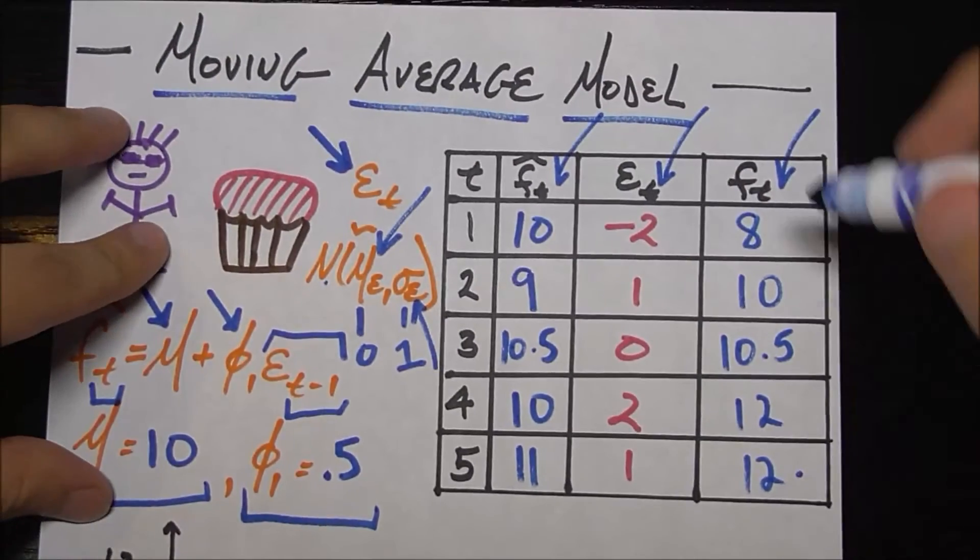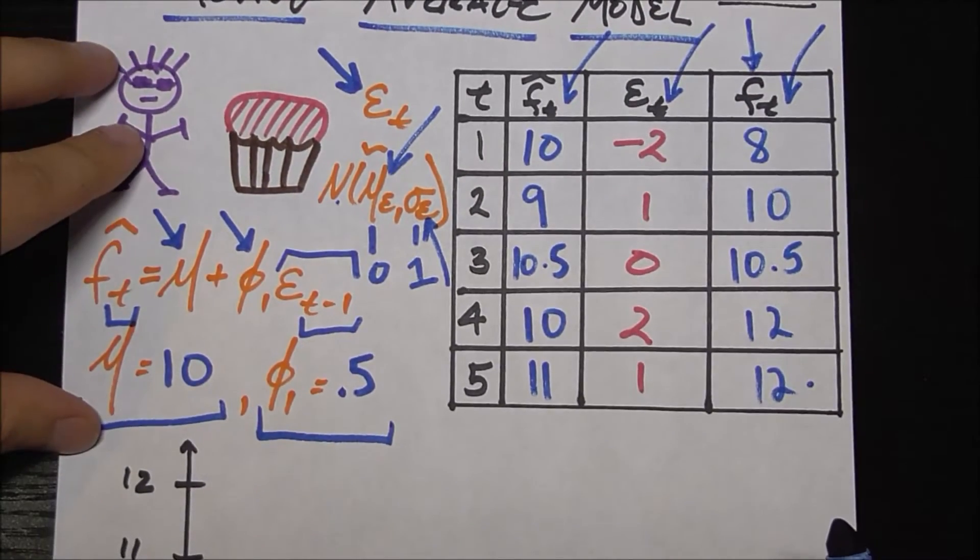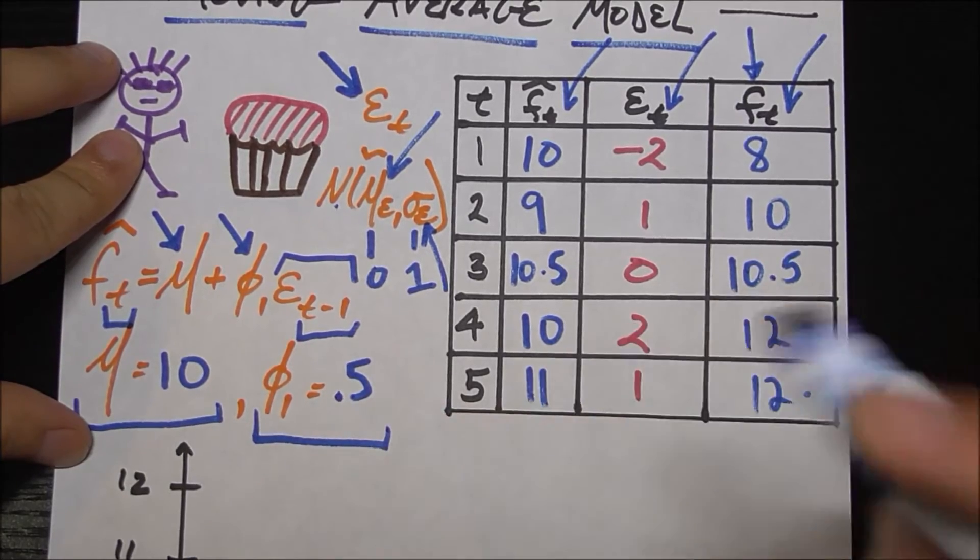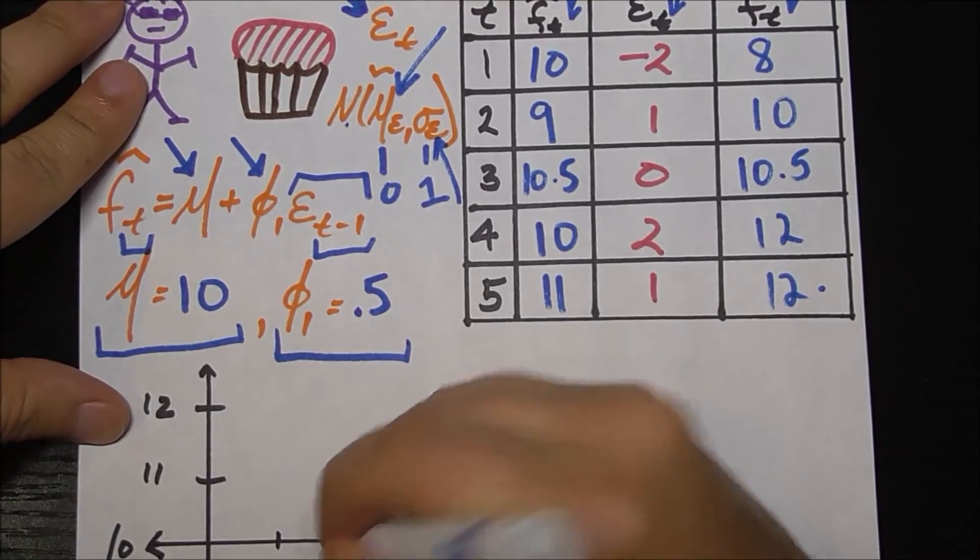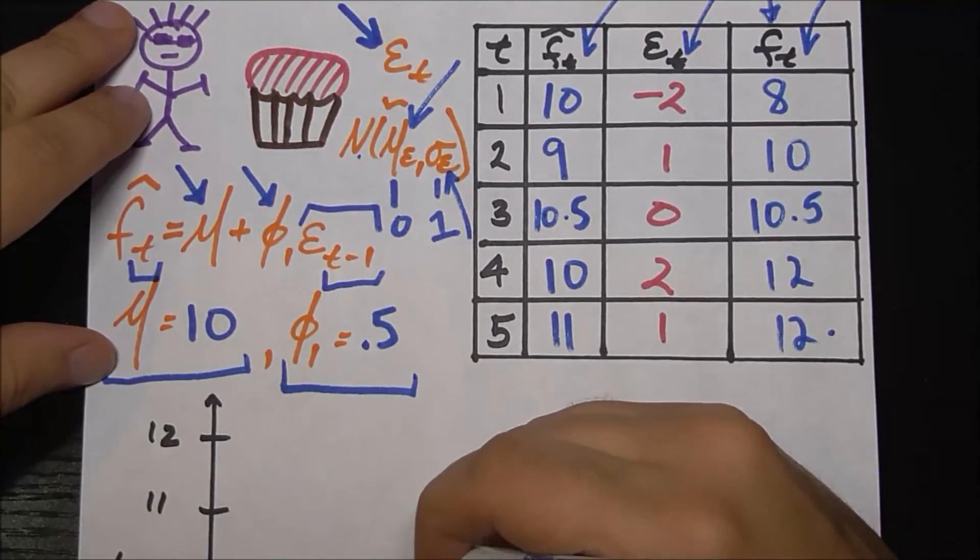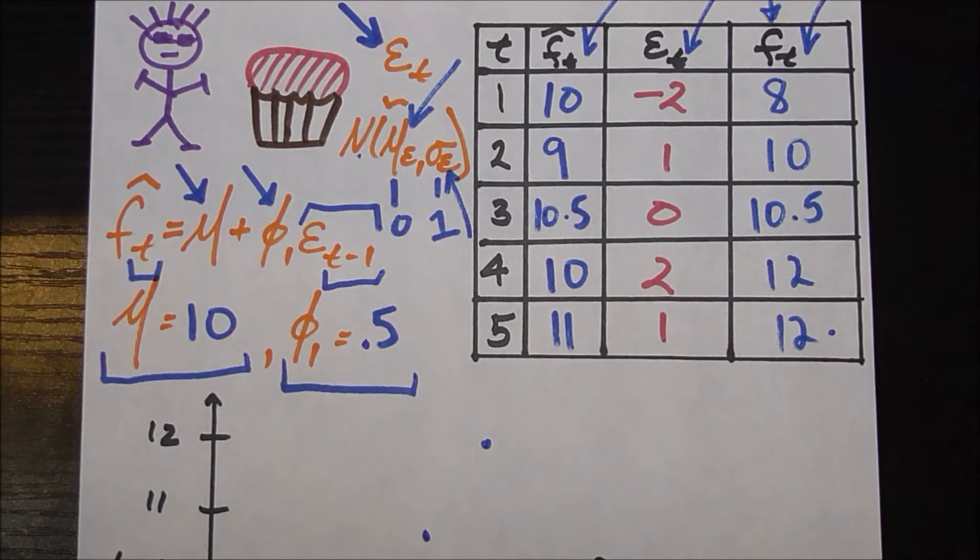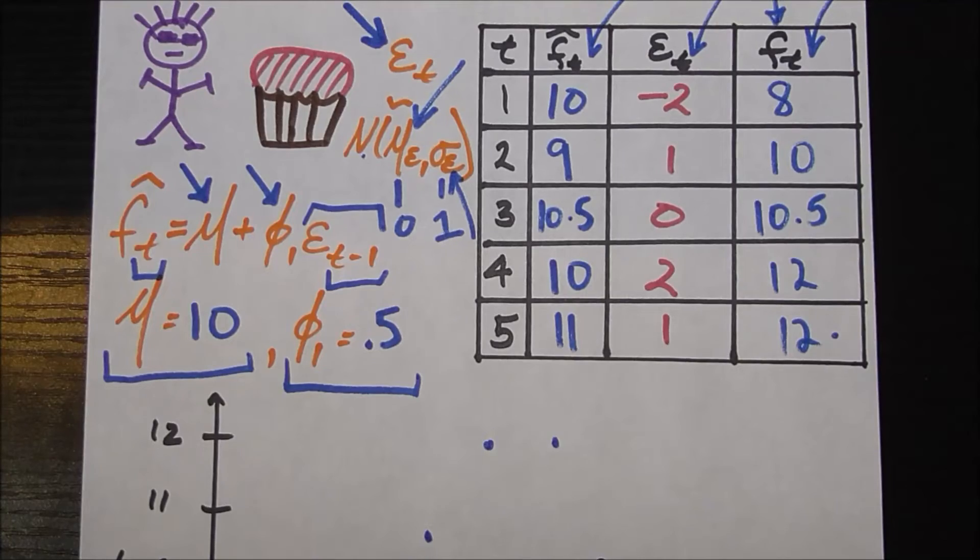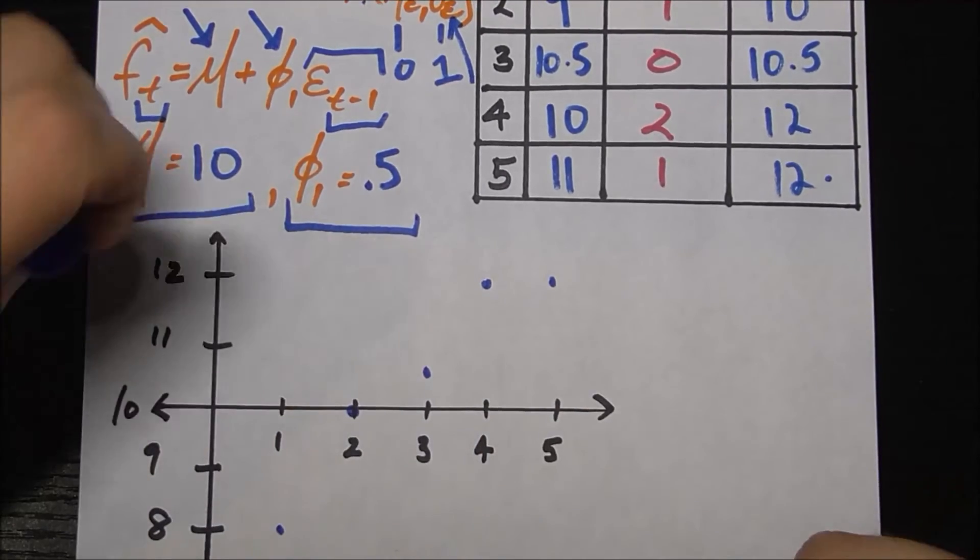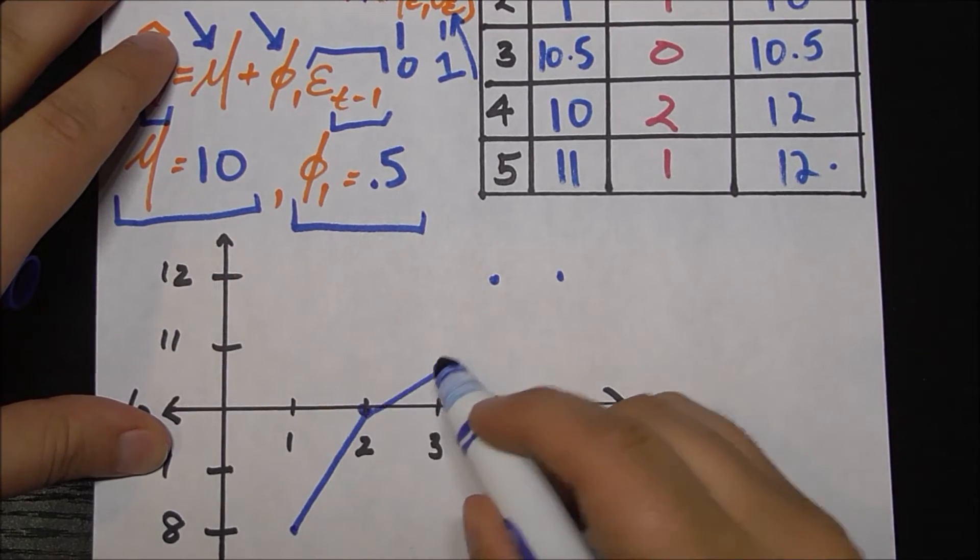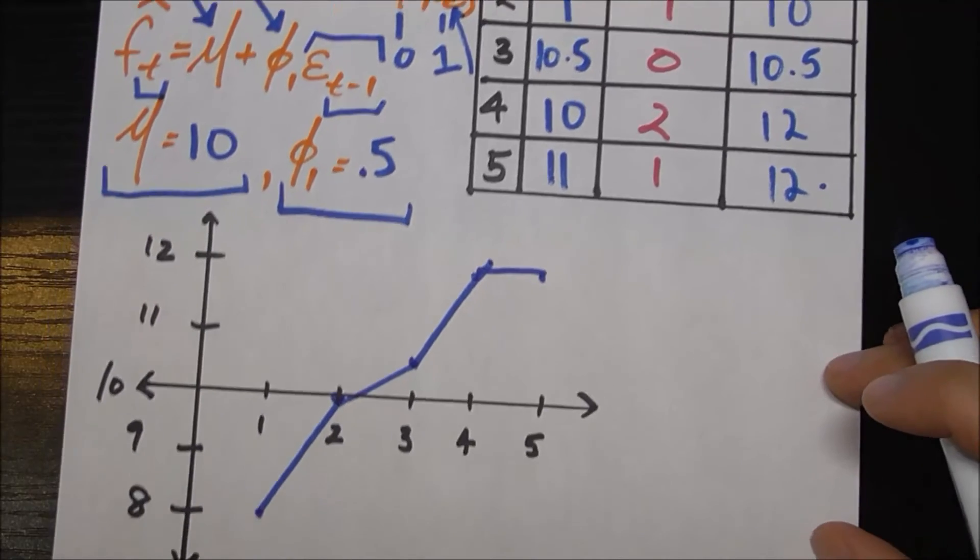So now let's go ahead and plot these points. And by these points, I mean this column, which is how many cupcakes you should have brought each month. The first month you should have brought eight. So that's going to be down here. Second month you should have brought 10. So that's going to go right here. Third month you should have brought 10.5. So that's going to be here. Then we have 12 here. And then we have 12 again. So now if I just crudely connect the dots between all these points, it's going to look like here, here, here, and then plateaus right there. So that's kind of what it looks like.